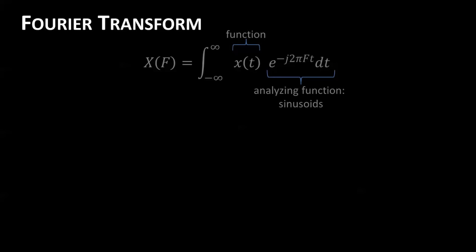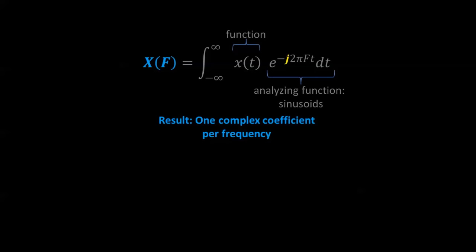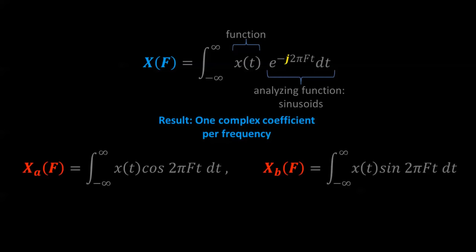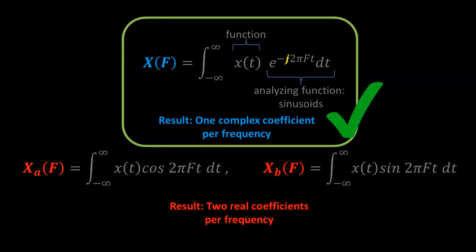We can represent the sinusoids — the analyzing function — as a complex exponential. Don't be discouraged by complex notation; this representation makes the integral much easier to use, and the result is one complex coefficient per frequency. If you insist on real notation, you'll have to calculate two different integrals — one correlating with cosine and one with sine — giving two real coefficients per frequency. Most engineers find working with one complex coefficient and one integral much easier.